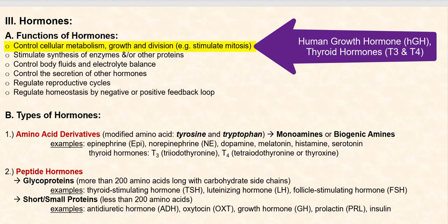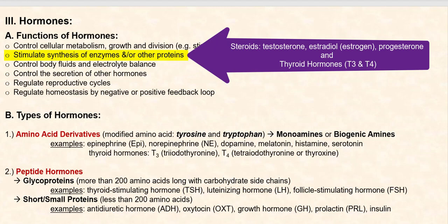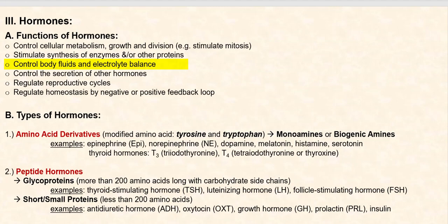Examples of hormones that do this are human growth hormone and thyroid hormones, T3 and T4, something we'll look at later. The second function is they stimulate synthesis of enzymes and/or other proteins. A good example would be your steroid hormones as well as T3 and T4, your thyroid hormones.